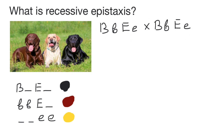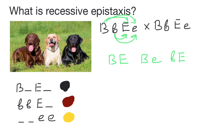How many different gametes can parent one produce? Gametes are haploid, so only one allele from each allelic pair can be found in the gametes. The first variant would be capital B and capital E (BE). The second variant would be capital B and small e (Be). The next variant would be small b and capital E (bE). And the last variant would be small b and small e (be). Parent two has the same genotype, so parent two is going to produce the same four variants of gametes.